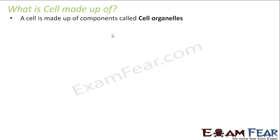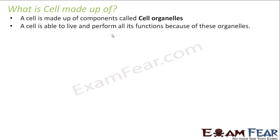Now that we are clear on unicellular and multicellular organisms, let us see what a cell is made up of. We saw that cells are the structural and functional units of every living organism. Now let us look at the structure inside one cell. A cell is made up of components called cell organelles — even inside the cell you have different components. A cell is able to live and perform all its functions because of these organelles.